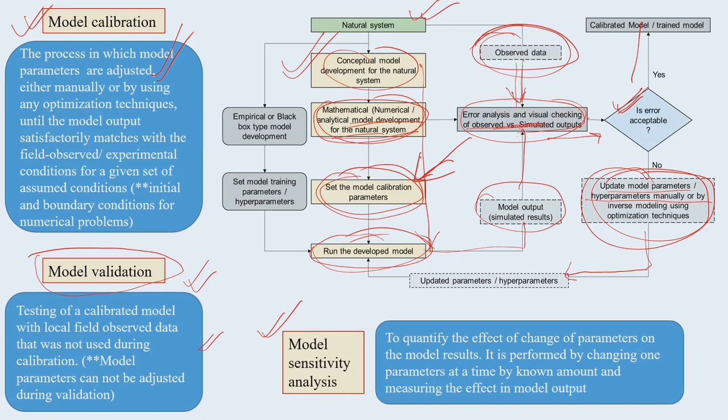To quantify the effect of a parameter change on model results, we carry out sensitivity analysis by changing one parameter at a time by a known amount and measuring the effect on model output. For example, in a crop model, we can change rainfall values — 50 mm, 60 mm, 100 mm — and observe the changes in crop yield. If there are significant changes in outcome, then crop yield is very sensitive to rainfall input in your model.